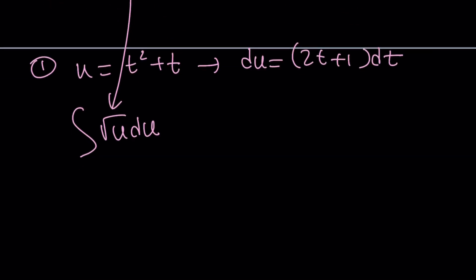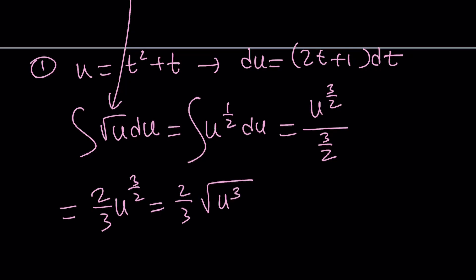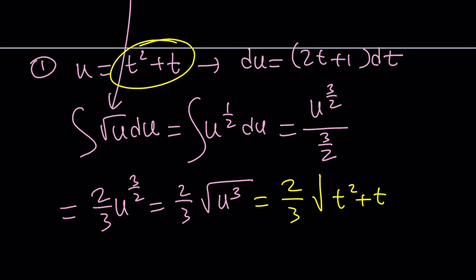How do you integrate square root of u? Write it as u to the ½ and use the power rule: add 1 to the exponent and divide by the result. You get (2/3) u^(3/2), which can also be written as (2/3) times the square root of u cubed. Back-substituting u = t² + t gives (2/3) times the square root of (t² + t)³. Writing it with the power 3/2 is also perfectly fine.